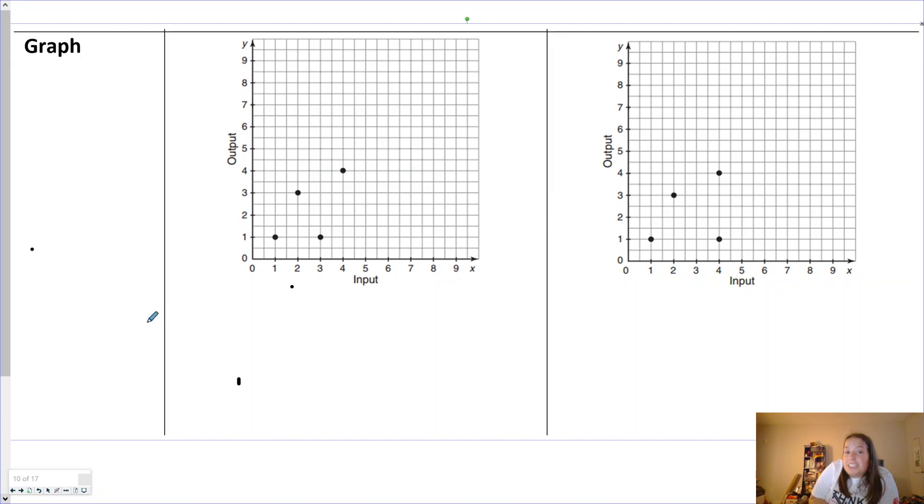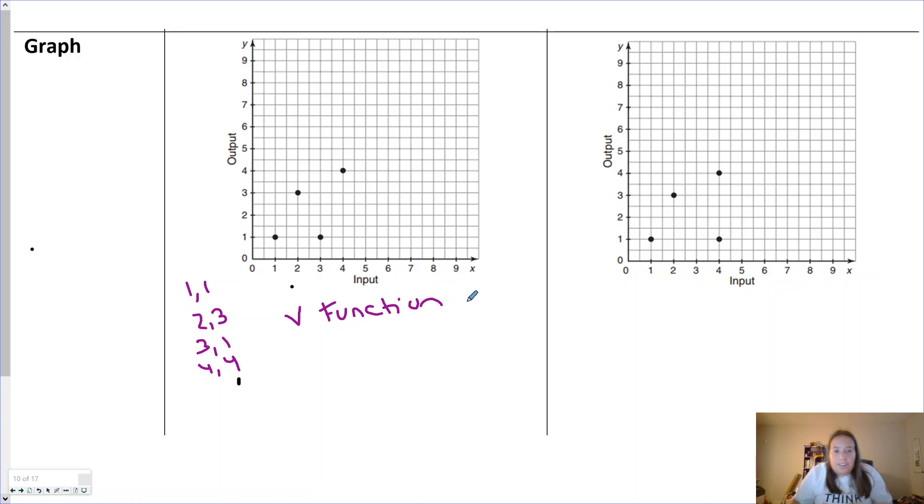On graphs, you can list the points the exact same way if that helps. (1,1), (2,3), (3,1), (4,4). And we see that no x values or inputs repeat. And therefore, it's a function. Each input has exactly one output.